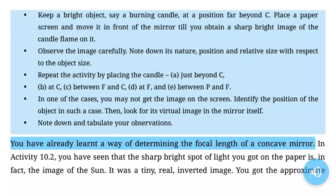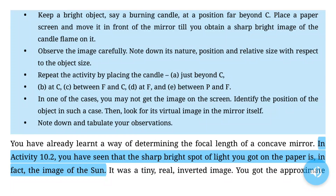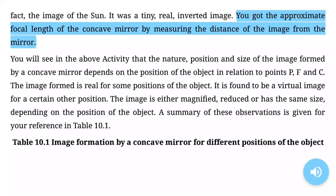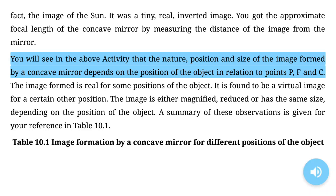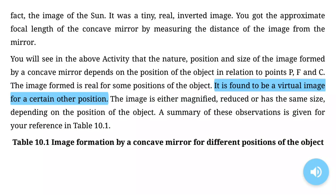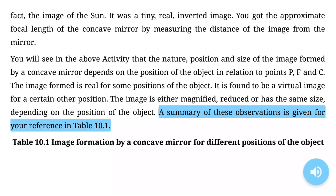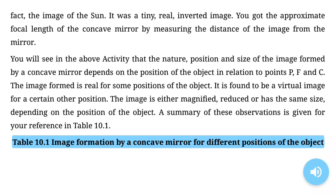You have already learned a way of determining the focal length of a concave mirror. In activity 10.2, the sharp bright spot of light you got on the paper is the image of the sun — a tiny, real, inverted image. The nature, position and size of the image formed by a concave mirror depends on the position of the object in relation to points P, F and C. The image is real for some positions, virtual for certain other positions, and either magnified, reduced or the same size depending on the position of the object. A summary is given in Table 10.1.